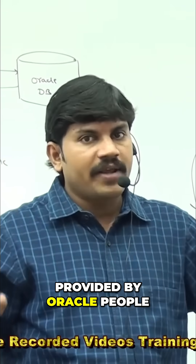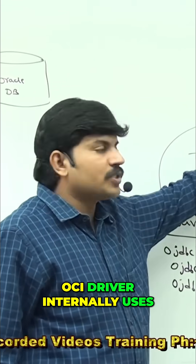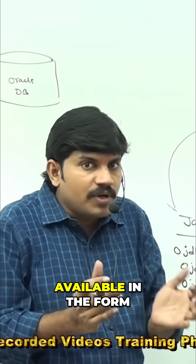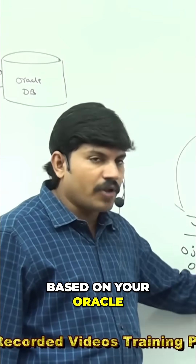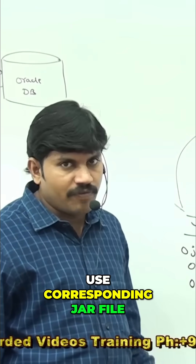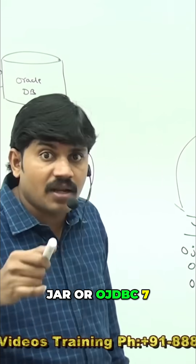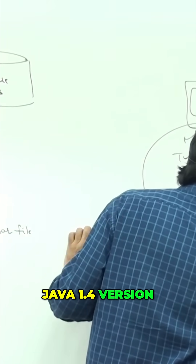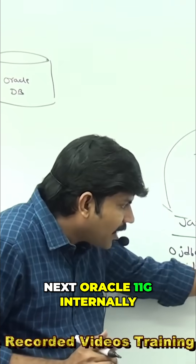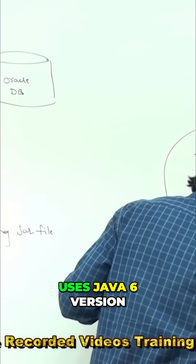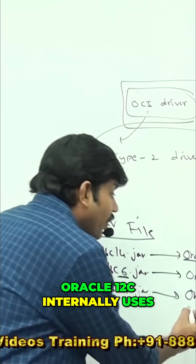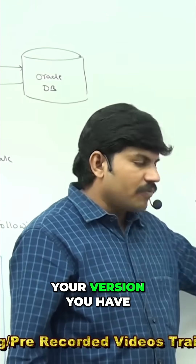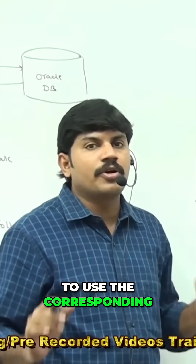The OCI driver is the Type 2 driver provided by Oracle. It internally uses OCI libraries to communicate with the database. The OCI driver and corresponding OCI libraries are available as a JAR file. Based on your Oracle version, use the corresponding JAR file: ojdbc14.jar for Oracle 10g (Java 1.4), ojdbc6.jar for Oracle 11g (Java 6), or ojdbc7.jar for Oracle 12c (Java 7).